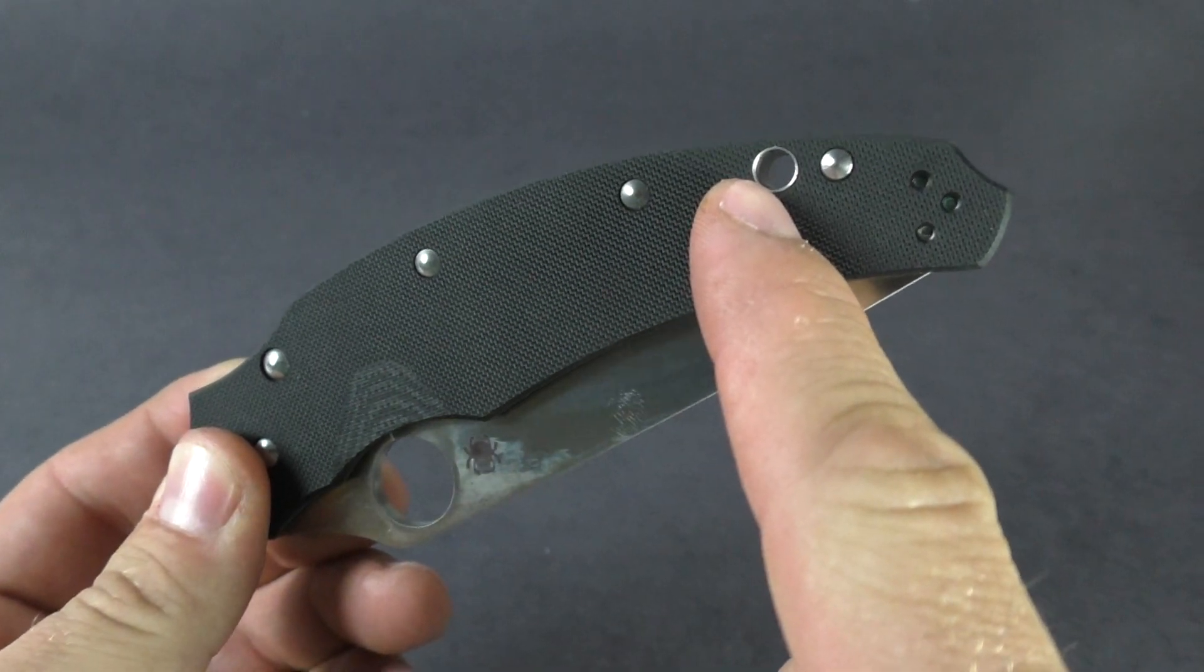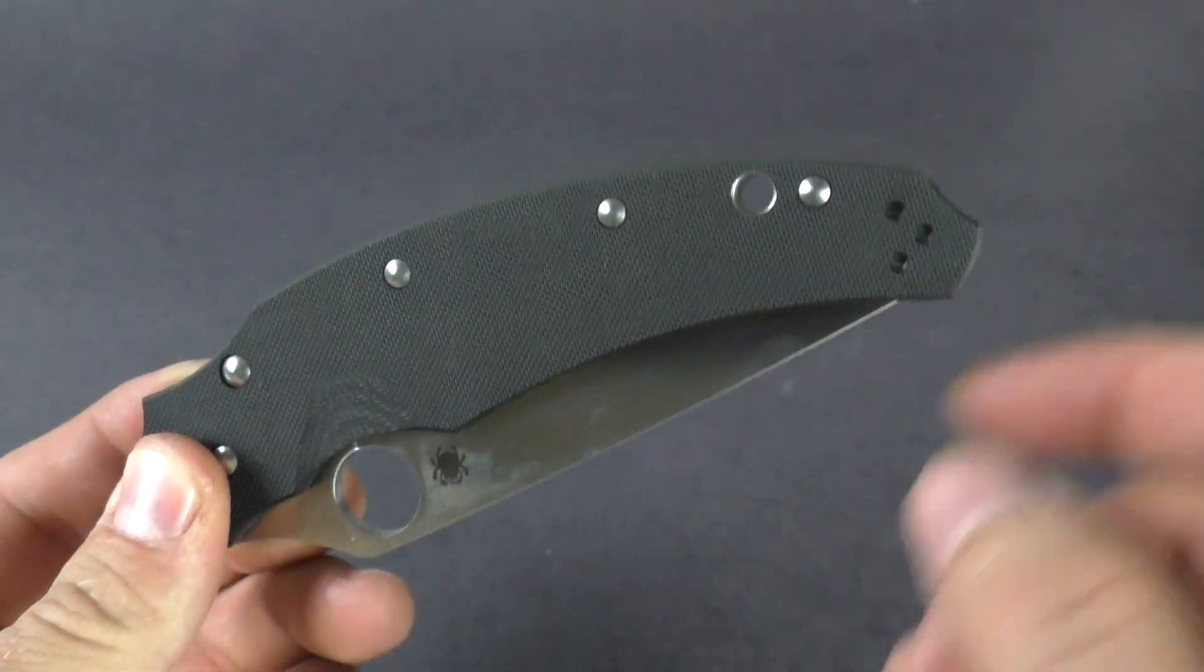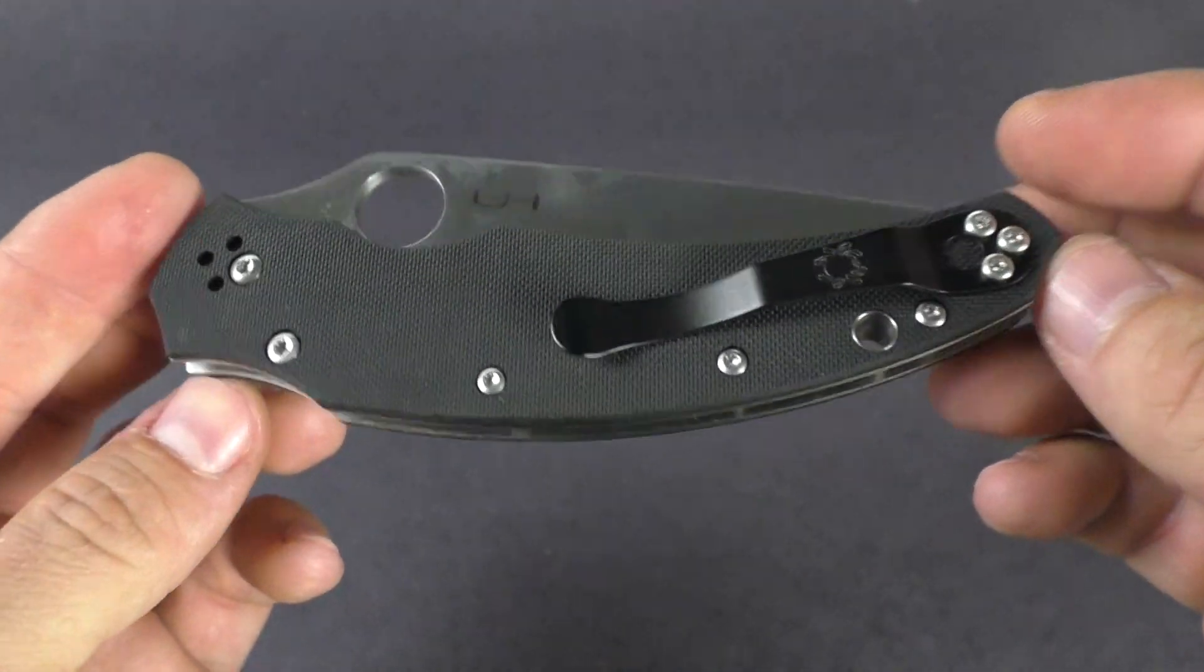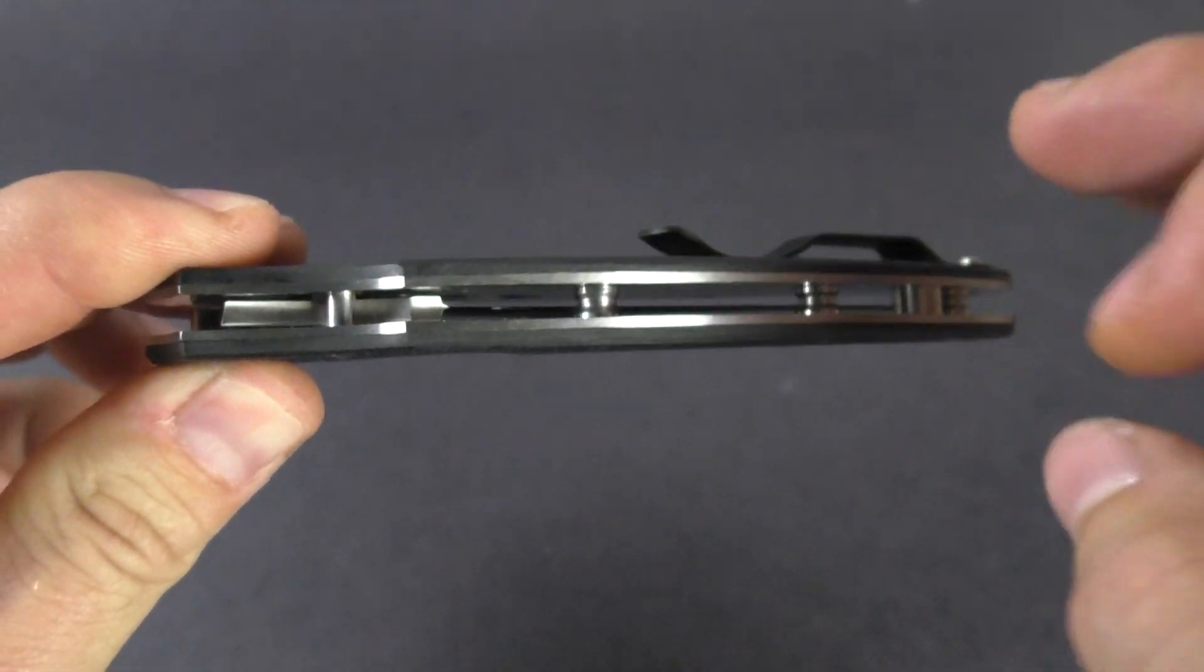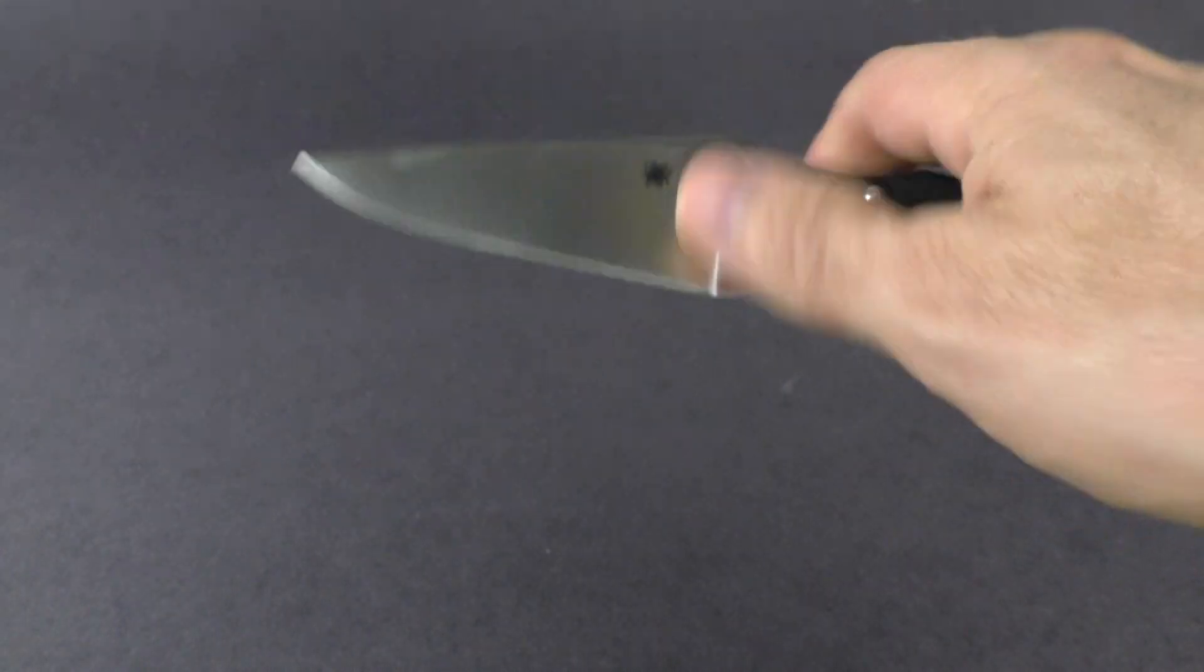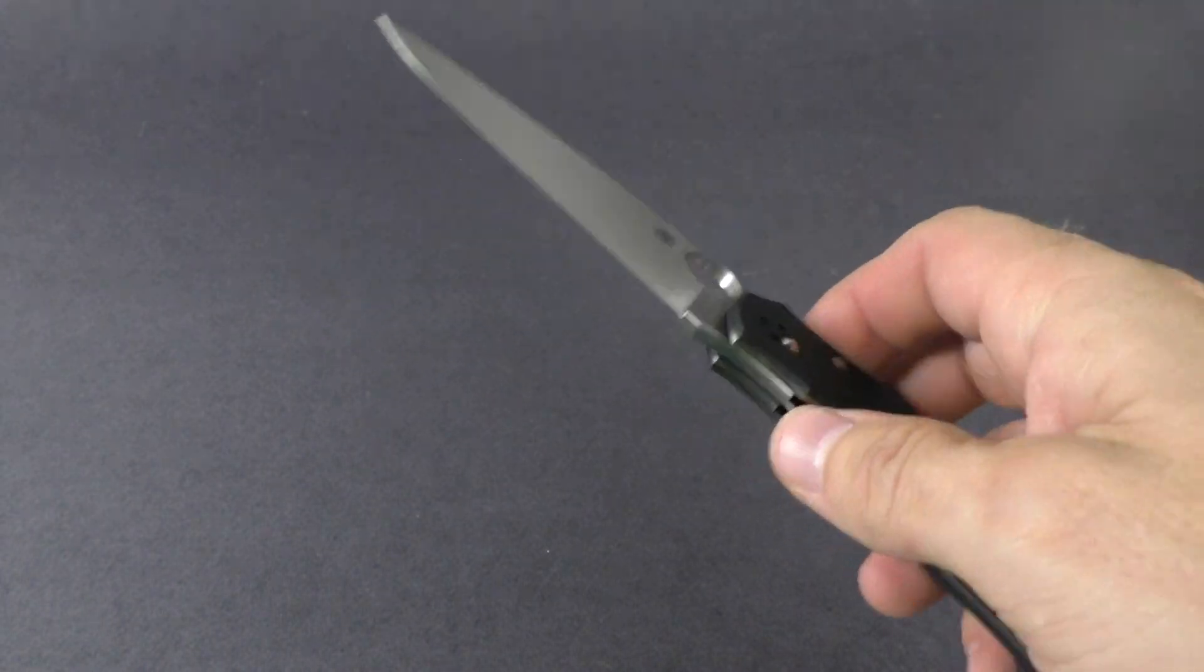You could attach any kind of jewelry on there if you wanted to. Nice steel liners, they are skeletonized, that really helps with that weight problem, really reduces the weight there.